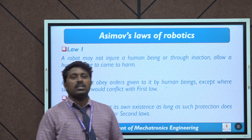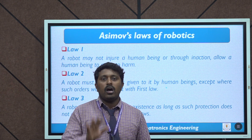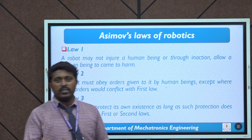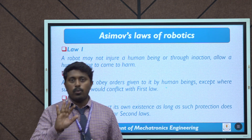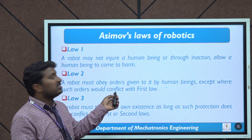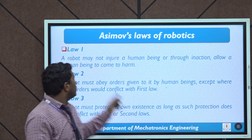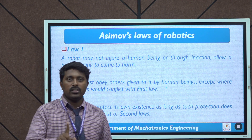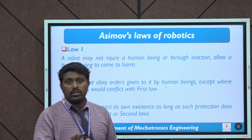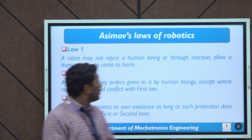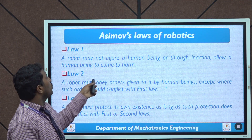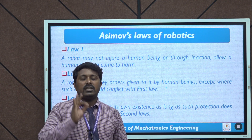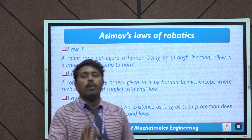Next are the laws of robotics. We are all aware of Isaac Asimov, who is considered the father of robotics. He framed three important laws that all robots must obey. The first law: a robot may not injure any human being, or through inaction allow a human being to come to harm. The first law is very simple and clear — the robot does not harm any human being.